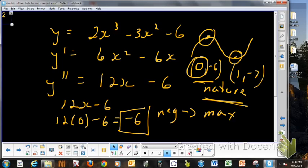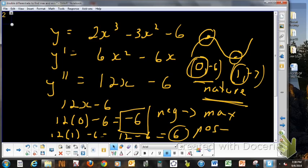And then, if we get rid of that and we do it for the 1, so we do just the x values, 12 times 1 minus 6, which is 12 minus 6, which is 6. It's a positive. And if it's positive, then we're dealing with a minimum value.